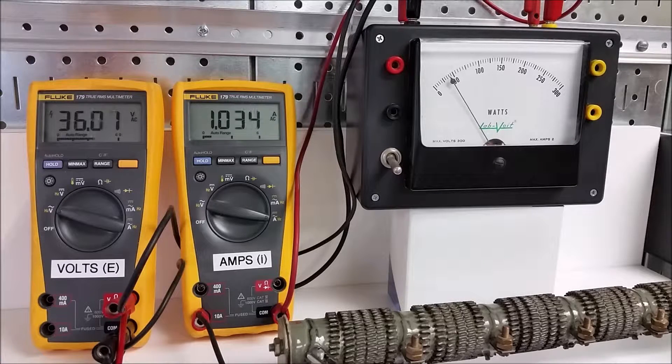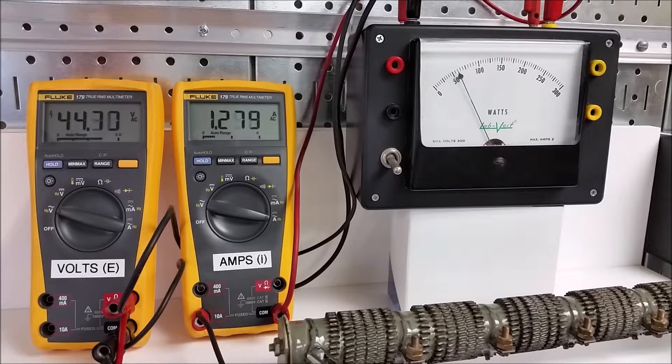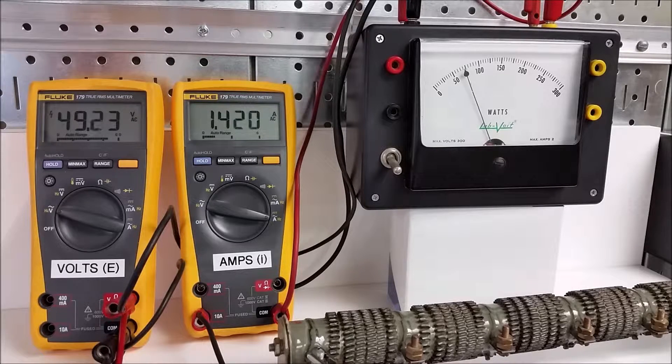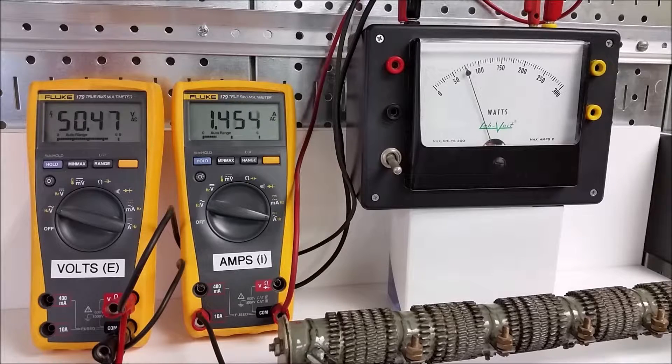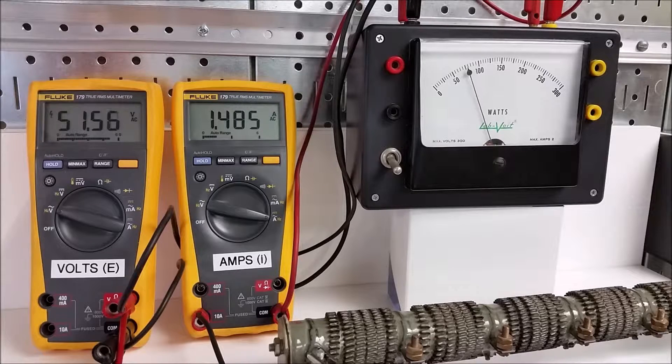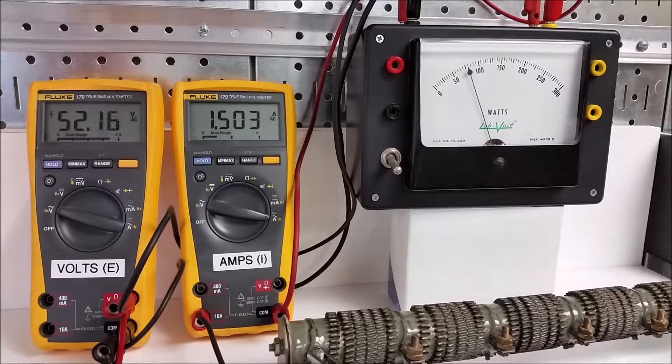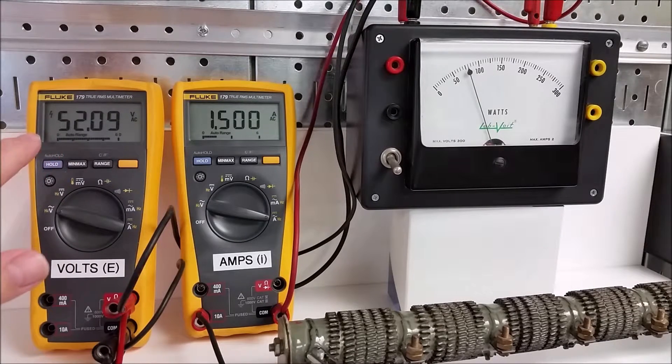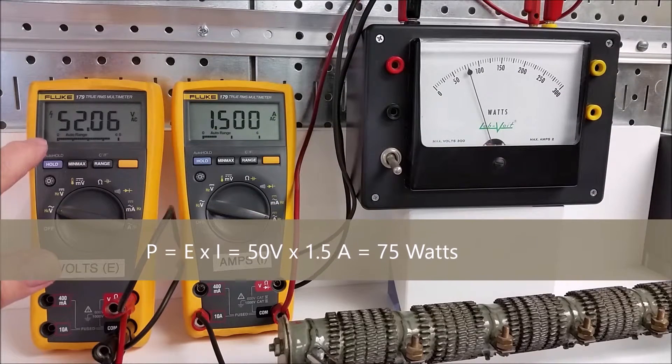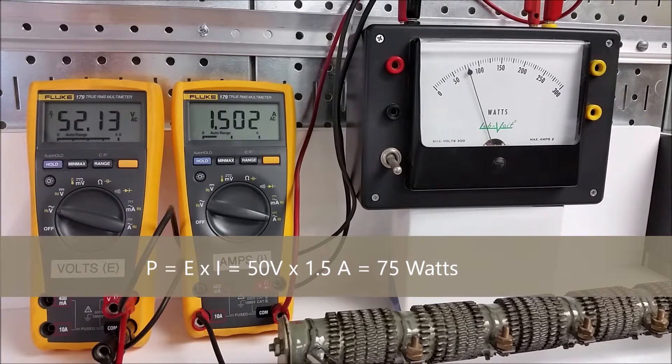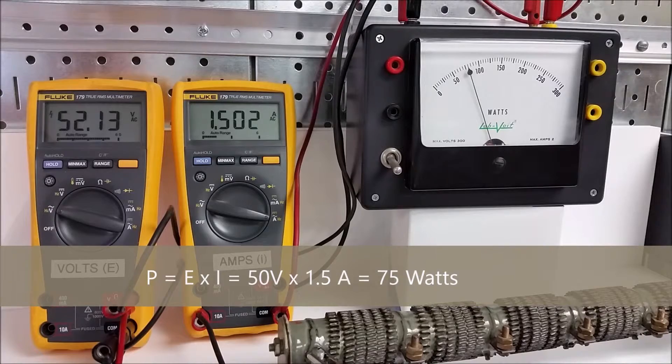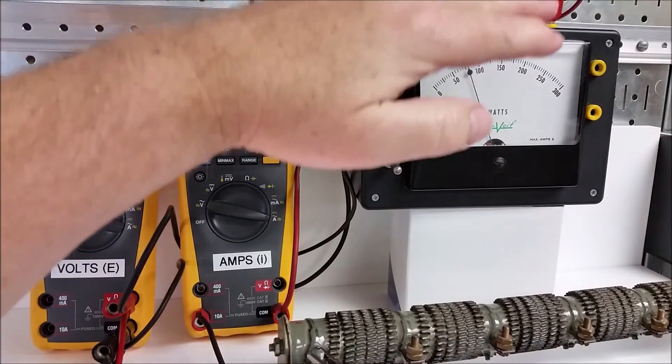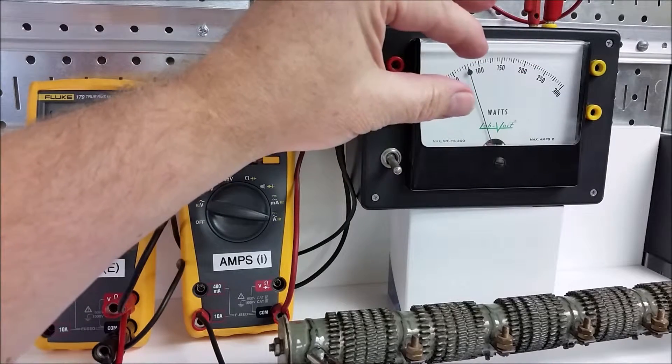Let's pick it up to an amp and a half. And so 1.5 amps gives us 52 volts. 1.5 times 52 should be about 75, 76 watts. And sure enough, our watt meter over here indicates exactly that.